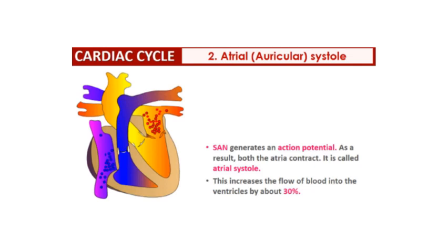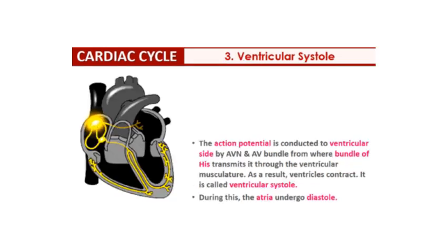Then we have atrial systole. The SA node generates an action potential, causing atrial systole — that is, both the atria contract, and this increases the flow of blood into the ventricles by about 30%.